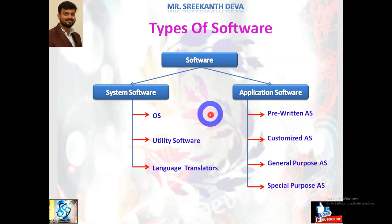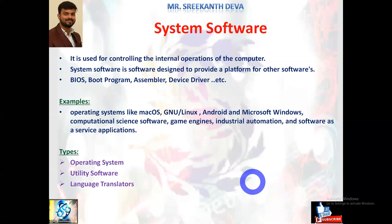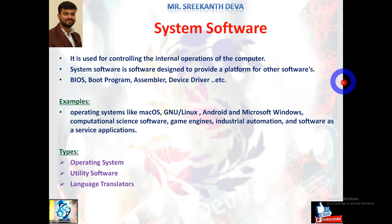In this session we'll discuss system softwares like operating systems and utility softwares in detail. Remaining topics like language translators and application softwares will be discussed in coming sessions. So what is system software? It is used for controlling the internal operations of the computer. The main features of system software are: it acts as an interface between the user and the computer, makes operations more effective and efficient, controls all processing activities, and ensures computer resources and power are used in the most efficient manner. It checks availability of input devices and sends output to output devices.